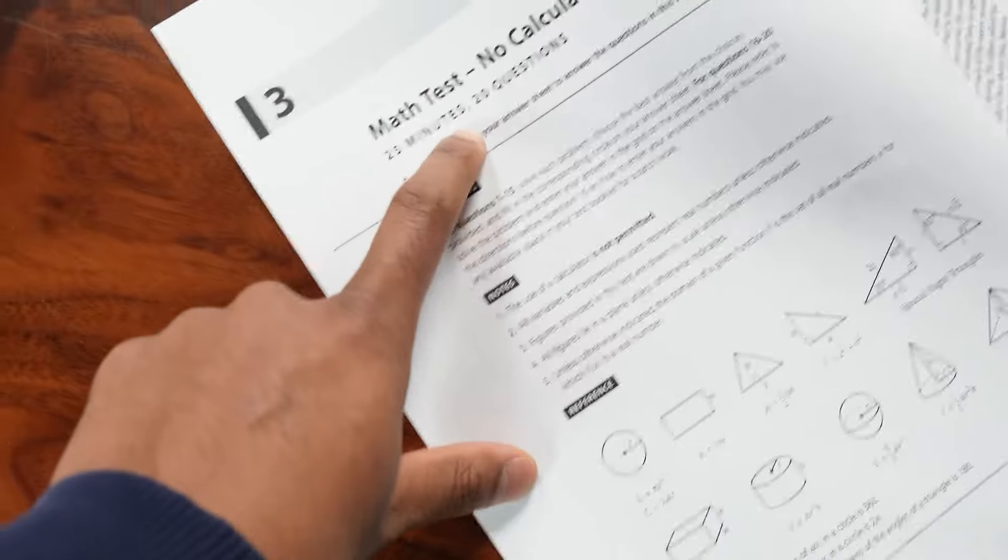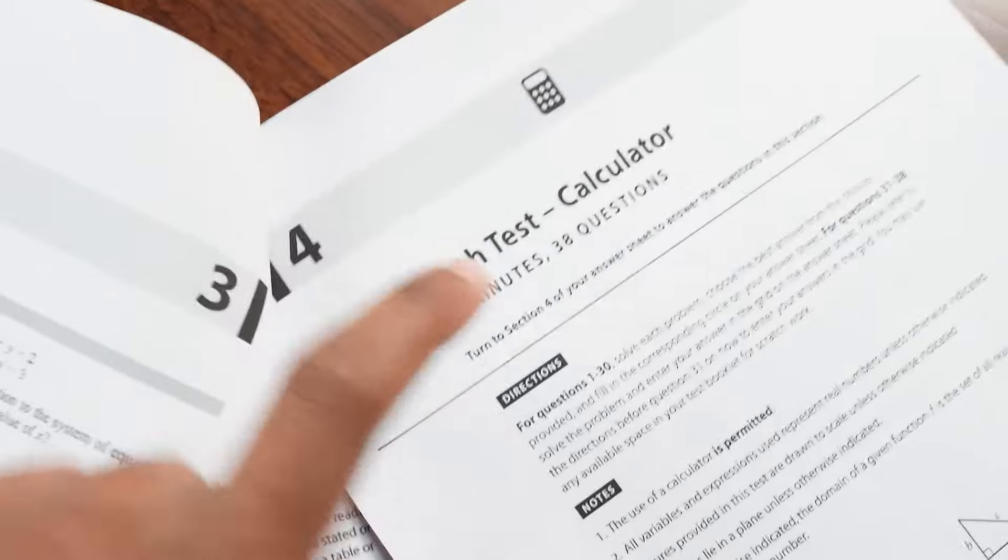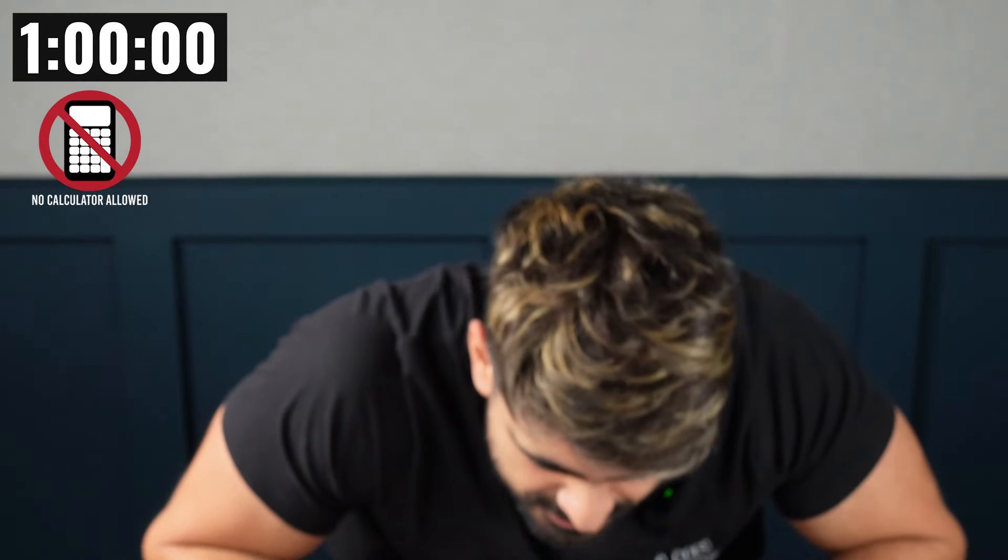Okay. You can have a look at the paper. This section, right? 25 minutes. They even give you the formulas. 20 questions. Next one is 55 minutes, 38 questions. You have an hour for both. Easy, mate. Yeah, I guess so. Three, two, one.